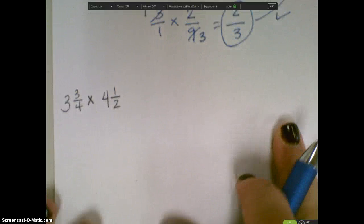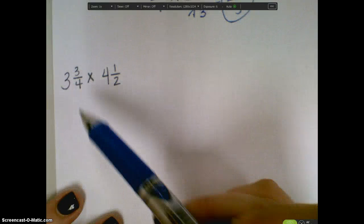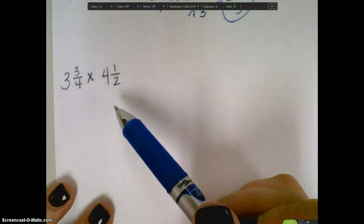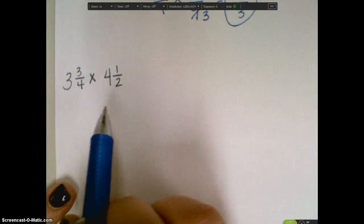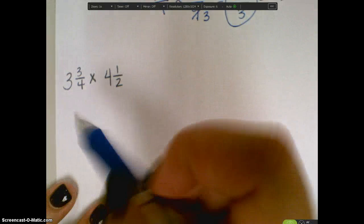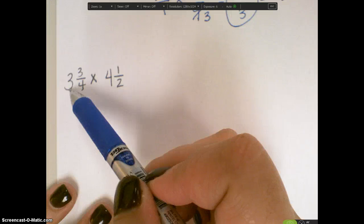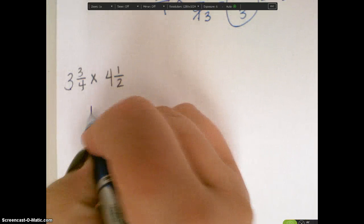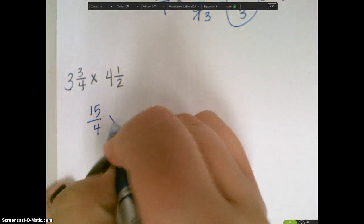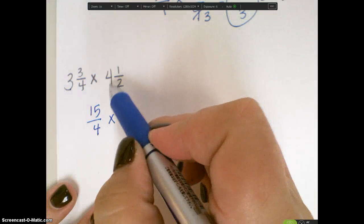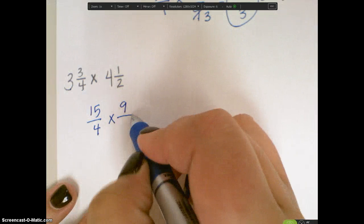The last example I'm going to do is multiplying mixed numbers. Here I have 3 and 3 fourths times 4 and 1 half. I cannot multiply these the way it is. I need to make them improper. So to do that I'm going to do 4 times 3 which is 12 plus 3 is 15. So I have 15 fourths times 2 times 4 is 8 plus 1 is 9, 9 halves.